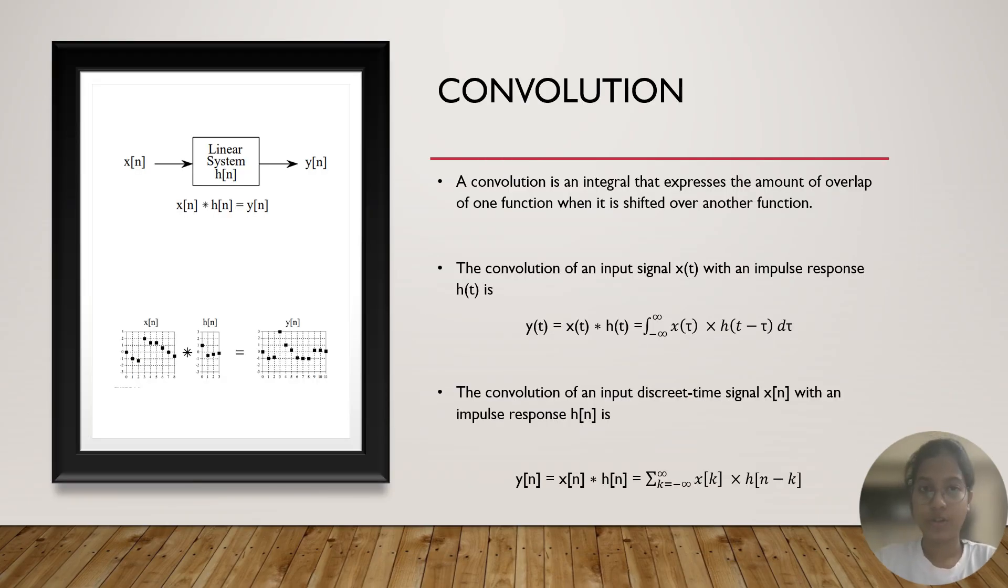Now, let us talk about convolution. Convolution is an integral that expresses the amount of overlap of one function where it is shifted over another function. Assume a graph of an input function as shown and a response function. So, when you are convoluting it, you basically move the input function by a given time, every certain time, and try to overlap it with the impulse function.